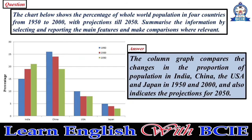The column graph compares the changes in the proportion of population in India, China, the USA, and Japan in 1950 and 2000, and also indicates the projections for 2050.